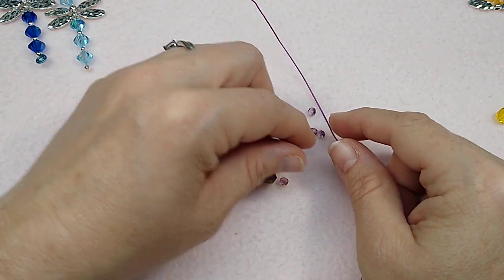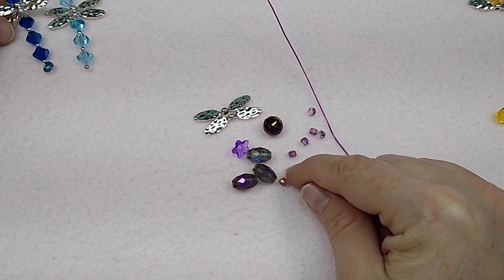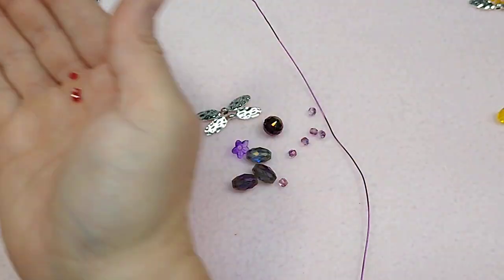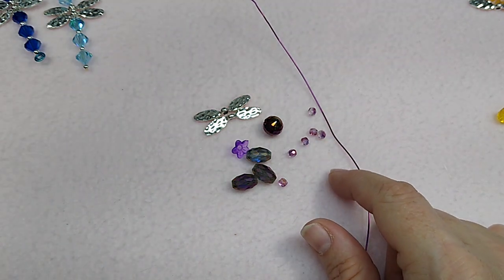And then you need one, two, three fire polish beads or rondelles. I'm using tiny rondelles for this red one and tiny rondelles for the yellow one. For the purple one, I'm using these fire polish beads.